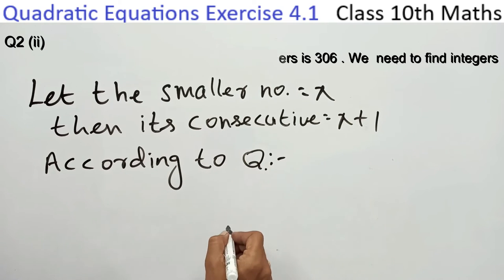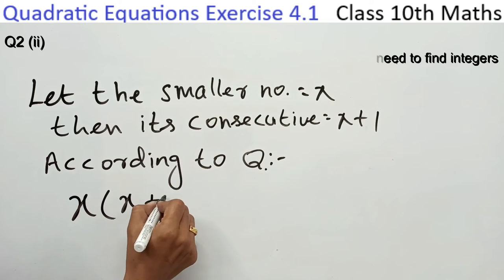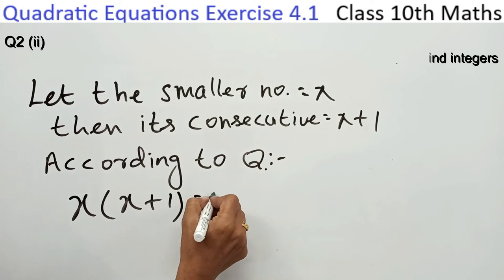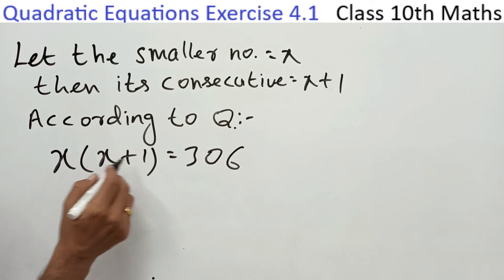According to the question, x into x plus 1, their product is 306. Now we need to solve this.